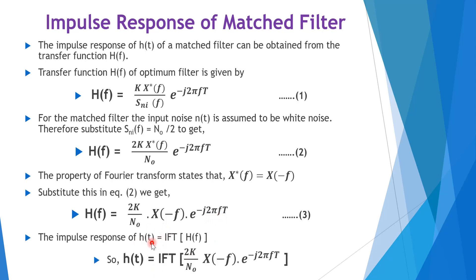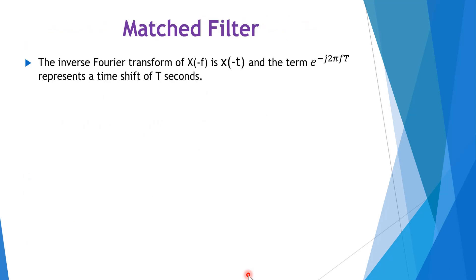The impulse response h(t) is the inverse Fourier transform of H(f). We can find the impulse response h(t) as the inverse Fourier transform of 2k/N0 times X(−f) times e^(−j2πft). The inverse Fourier transform of X(−f) is x(−t), and the term e^(−j2πft) represents a time shift of t seconds.